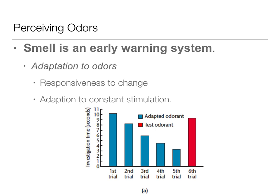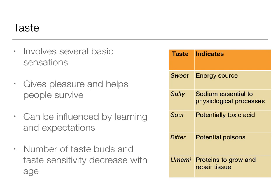Now we're going to move on to gustation — taste. Taste really involves several basic sensations — the ones you're familiar with from elementary school: sweet, salty, sour, and bitter. And we've got another one that's been added: umami. They have different indications as to why we can taste them, telling us different things about nutrition and what our body needs to survive. Sweet sugar is a carbohydrate providing quick energy, so we have a predisposition to want sweet things. Salty is also a predisposition because sodium is an essential nutrient for our physiological processes.